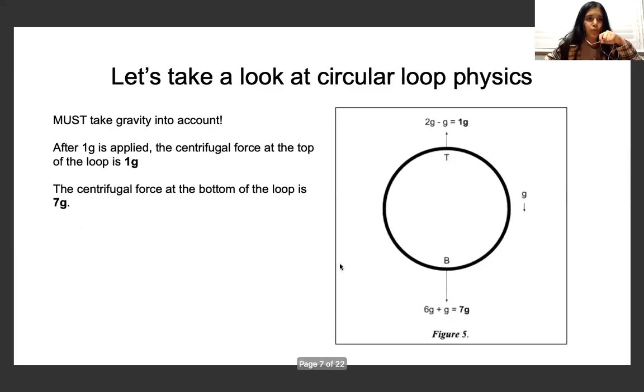And you might think this is okay because 4G is less than 6G, but we haven't applied gravity yet. After 1G is applied, we know that the centrifugal force at the top is 1G and at the bottom it's 7G. And 7G is simply too much for humans to bear. So we'll have to look at some other designs.